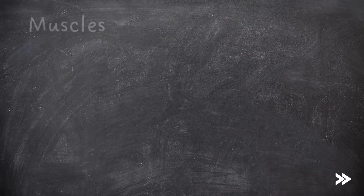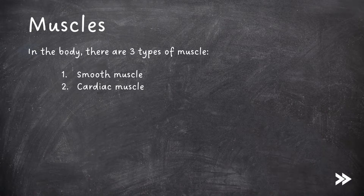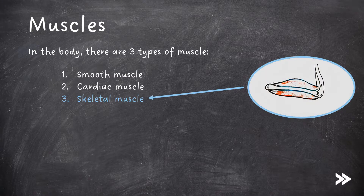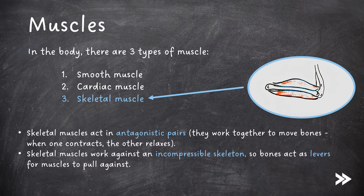So let's make a start. In the body, there are three types of muscle: smooth muscle, cardiac muscle, and skeletal muscle. This part of the specification focuses on skeletal muscle. Note that skeletal muscles act in antagonistic pairs, meaning that they work together to move bones — when one contracts, the other relaxes. Skeletal muscles work against an incompressible skeleton, so the bones act as levers for muscles to pull against.